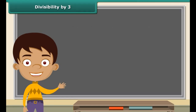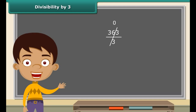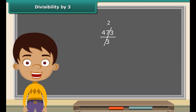We cannot apply a similar rule to check whether a number is divisible by 3 or not. You will see why. 33 ends with 3. When divided by 3, it leaves a remainder of 0. Therefore, 363 is divisible by 3. However, 473 also ends with 3, but when divided by 3, it leaves the remainder 2. Therefore, 473 is not divisible by 3.